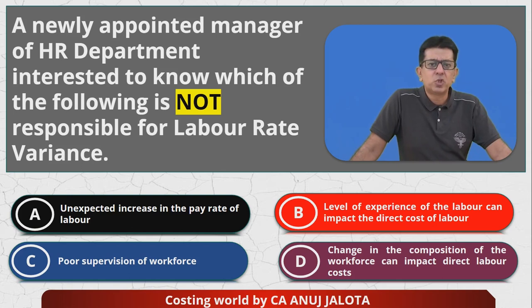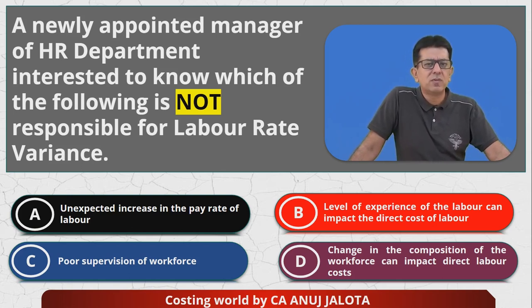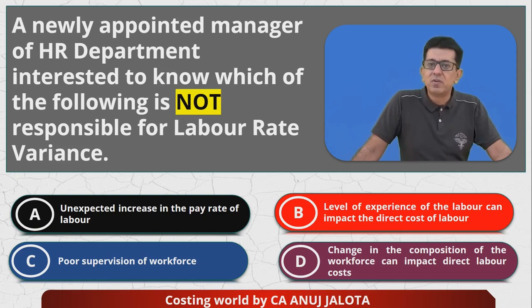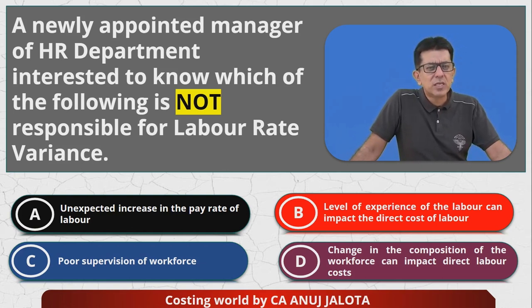Option C: poor supervision of workers. If you do not supervise workers, they will work inefficiently. If they work inefficiently, their efficiency variance will become adverse — not the rate variance. So I think C is NOT a reason for labor rate variance.